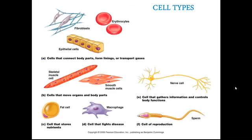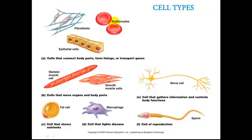Now, looking at different kinds of cells, there are many different kinds of cells. Here we have erythrocytes — these are red blood cells. When you see '-cyte' at the end of a word, C-Y-T-E, that has to do with cells. And 'erythro' has to do with red. So these are red blood cells.